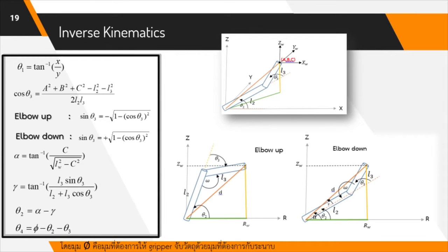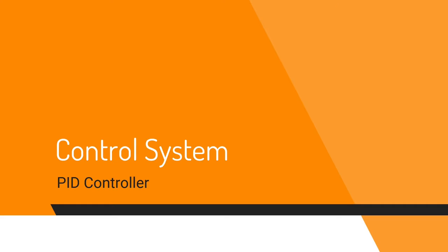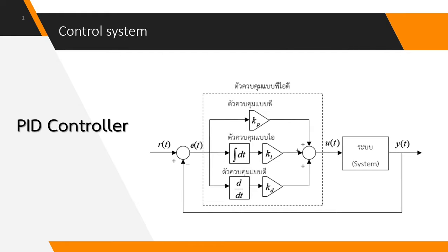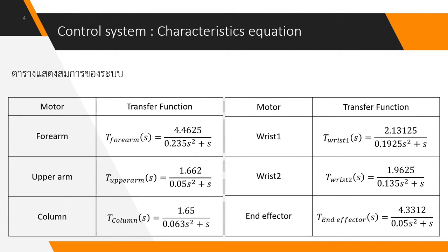This is the Inverse Kinematics equation. X and Y are recorded as geometric coordinates. Using these equations, we can find the essential values. The system uses the root-locus method and programs in MATLAB in order to help find the tuned PID parameters.